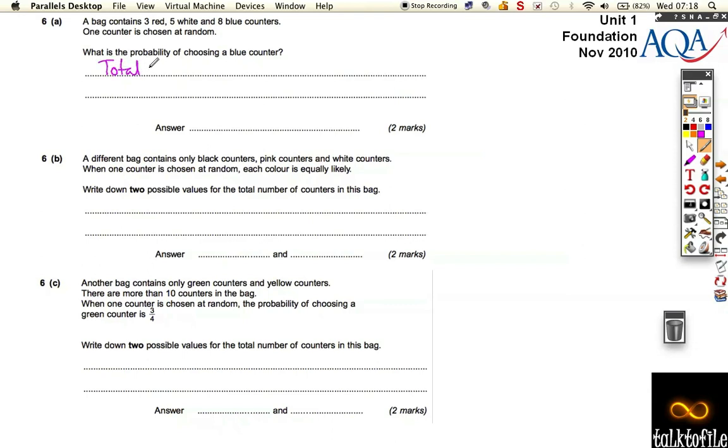So the total number of counters is 16. And if one's chosen at random, what's the probability of choosing a blue? Well, it's eight out of 16.